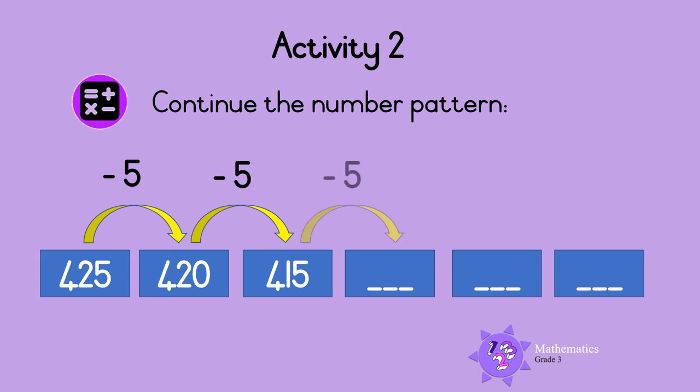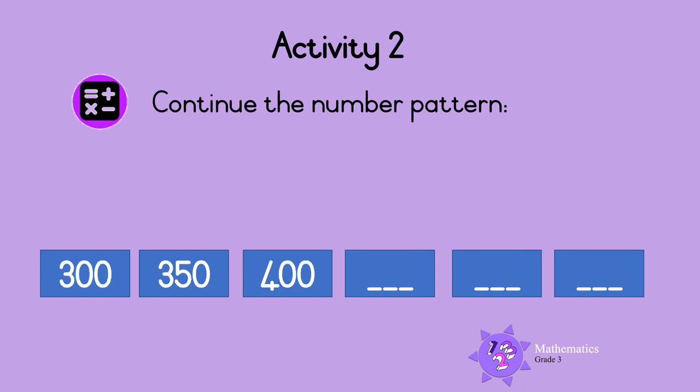So to get the next number we take 5 away from 415, that gives 410. Then 410 take away 5 gives 405, and lastly take away 5 from 405 to get 400. Well done!